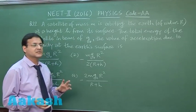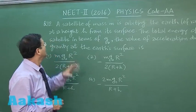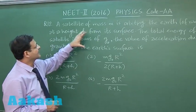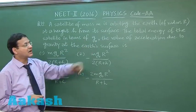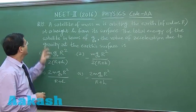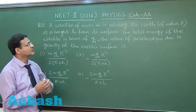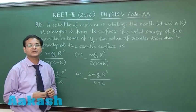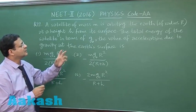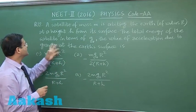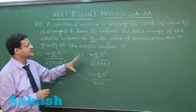Question 12 is again based on the chapter of gravitation. It says that a satellite of mass m is orbiting the earth; earth radius R has been given, at a height h from its surface. So the distance of the satellite from the center of the earth will be capital R plus h. The total energy of the satellite is to be expressed in terms of g₀, the acceleration due to gravity at the surface.